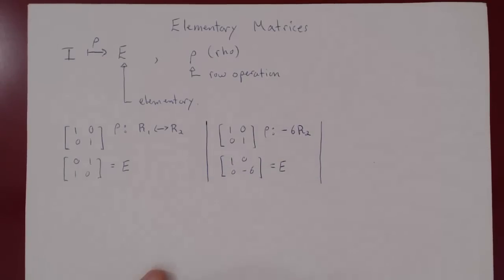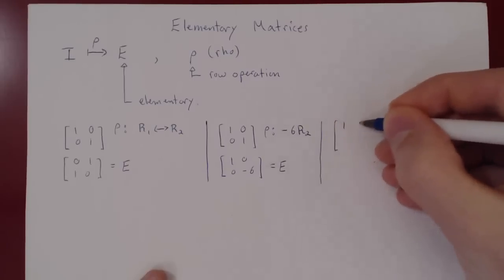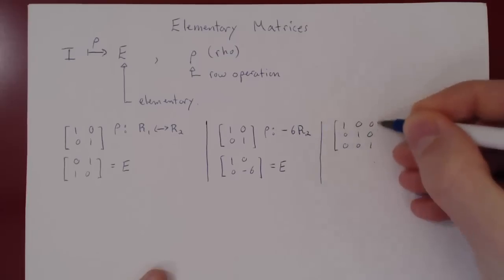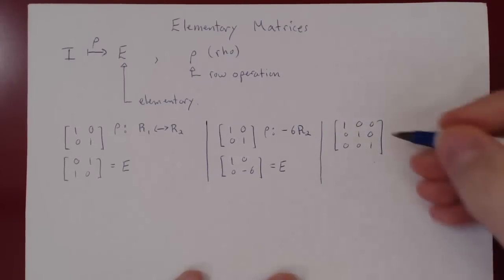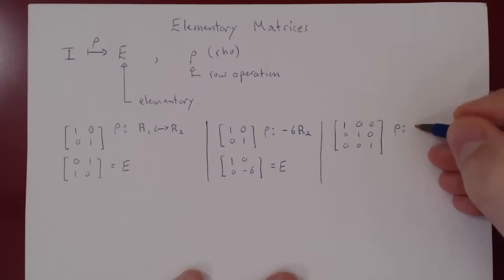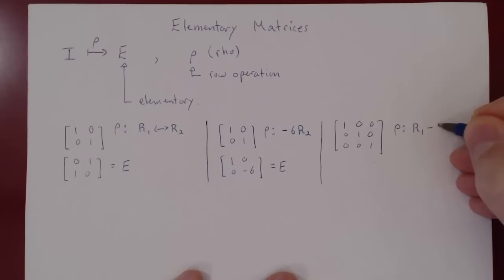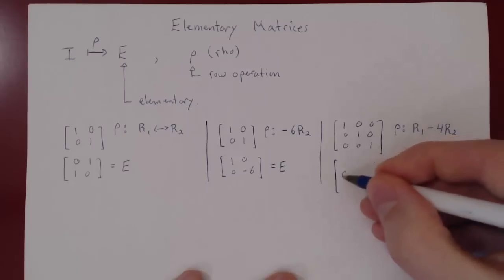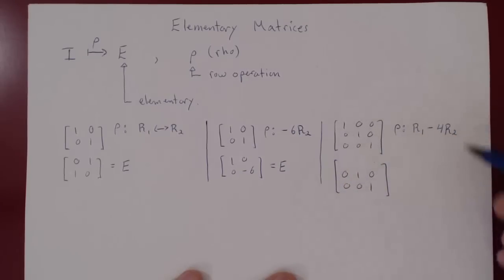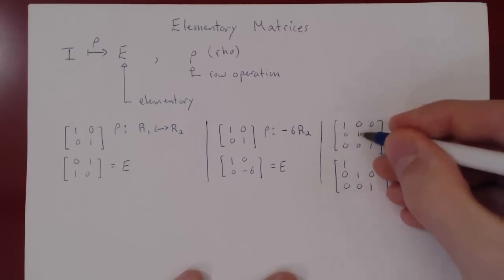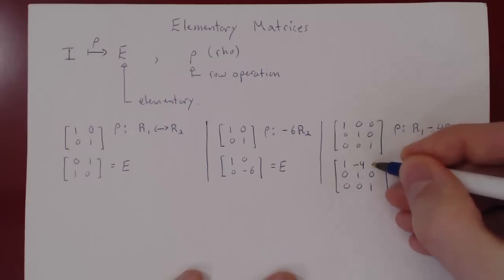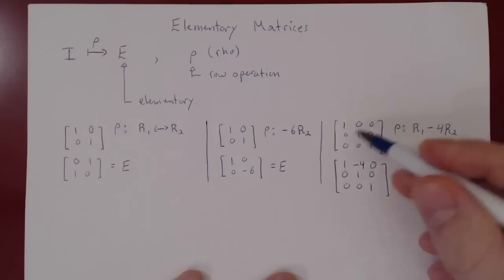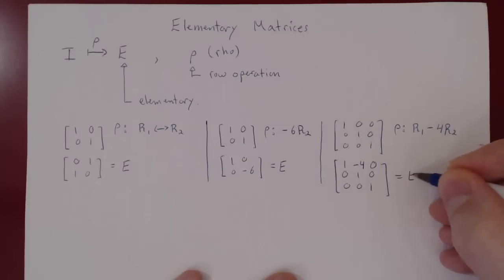You could take the 3×3 identity matrix [1,0,0; 0,1,0; 0,0,1] and apply our third type of row operation. Suppose we take row 1 and subtract from it 4 times row 2. We are only changing row 1, so we recopy rows 2 and 3. Row 1 becomes [1 - 4·0, 0 - 4·1, 0 - 4·0] = [1, -4, 0]. This matrix is obtained from I by applying a single row operation, so it is called elementary.